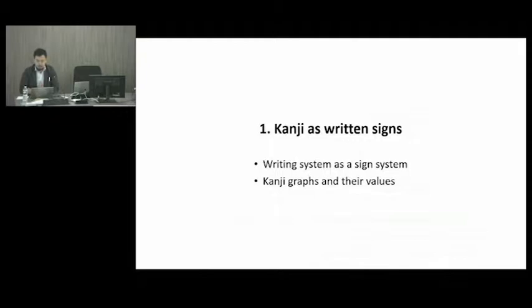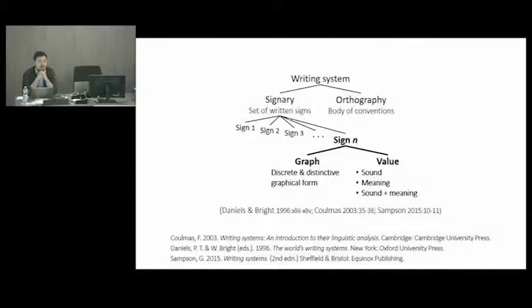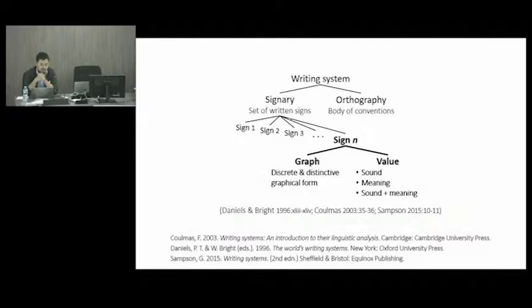In the first section we will look into the notion of kanji as written signs. The diagram here depicts what I consider a fairly standard view of writing systems. A writing system consists of a signary and an orthography, and the signary contains a certain number of signs. Each sign consists of two elements: the first is the graphical form, which I refer to as the graph, and the second is its value, which can be sound, meaning, or the combination of sound and meaning.